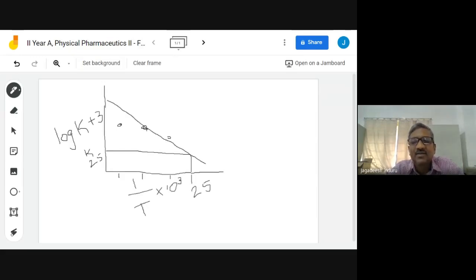So the shelf life is t90, time taken to degradation of your product to 90 degrees. That you have got the value, that is equal to formula 0.105.